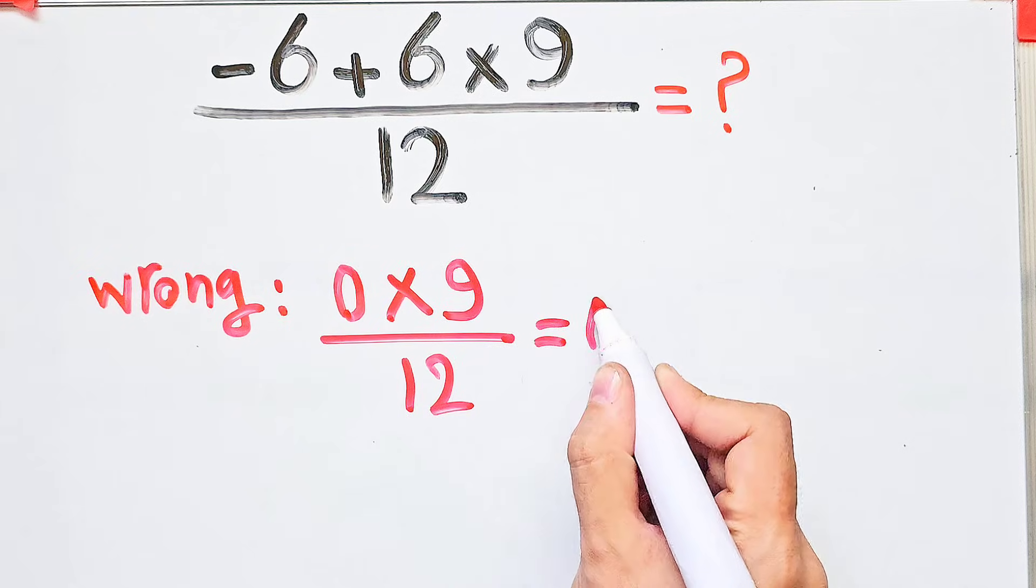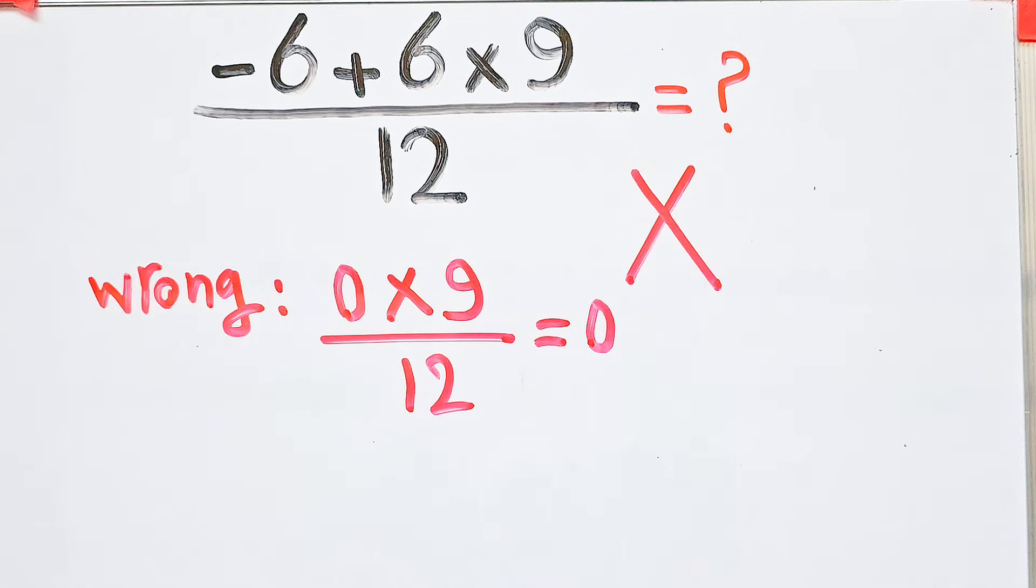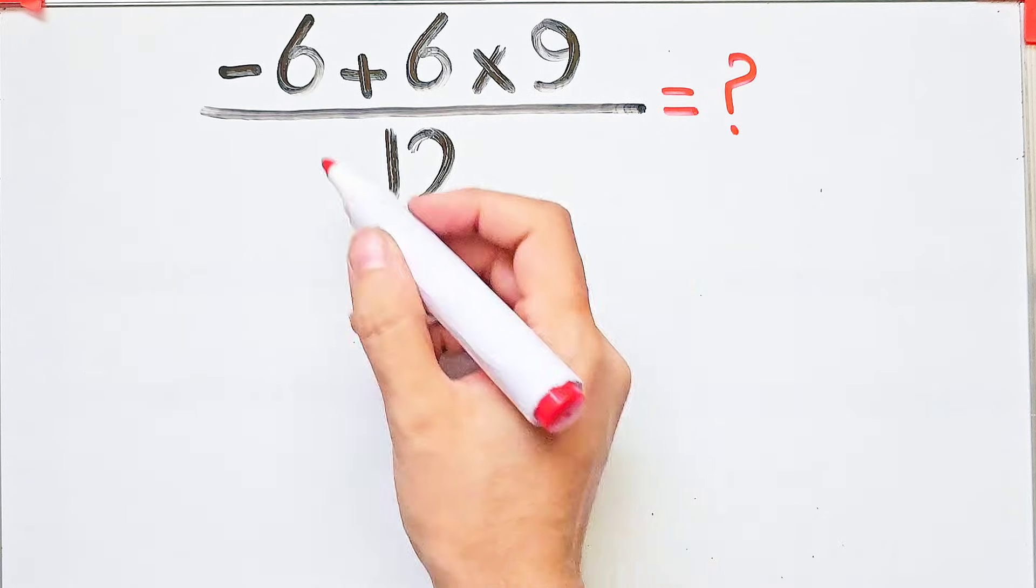Negative six plus six equals zero, and zero times nine then divided by twelve equals zero. But this answer is wrong. Let's solve it step by step together.